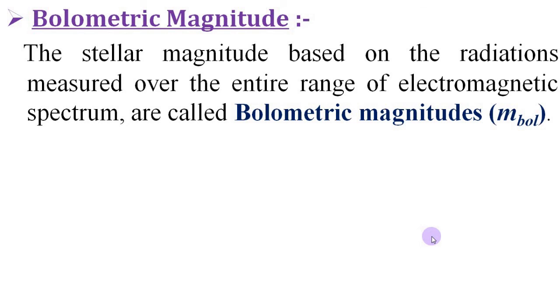The stellar magnitude discussed till now covers only some limited region or ranges of the stellar spectrum, specifically on the visible range. The stellar magnitude based on the radiations measured over the entire range of electromagnetic spectrum are called bolometric magnitudes.